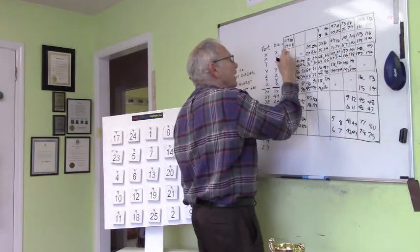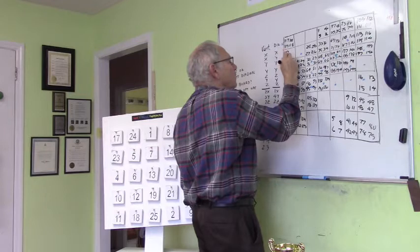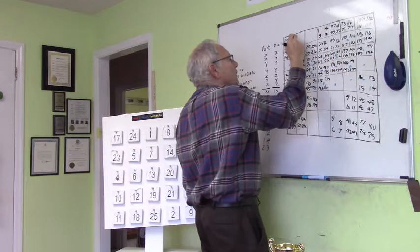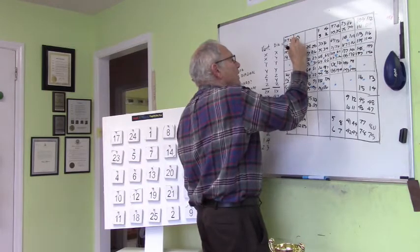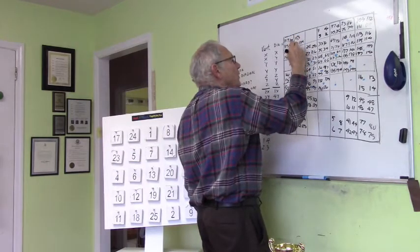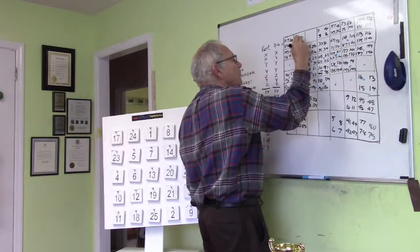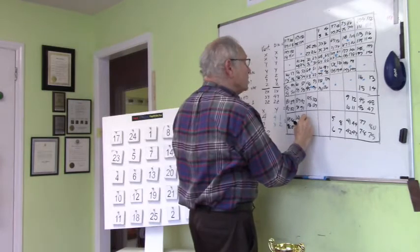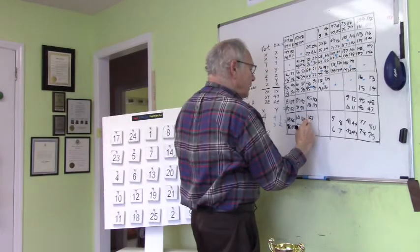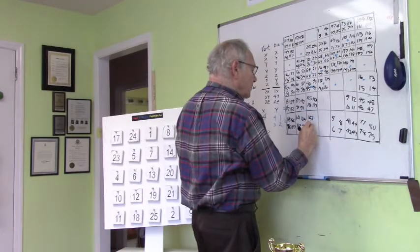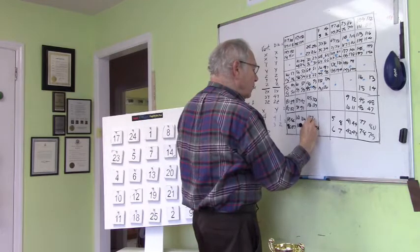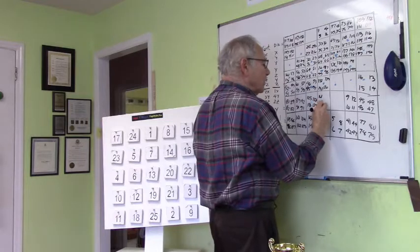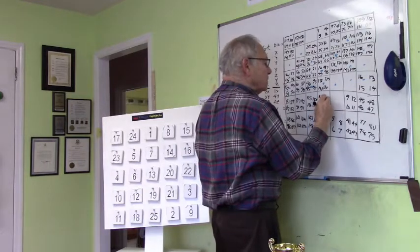We're back in the X region: 149, 150, 151, 152, 153, 154, 155, 156. We're now in the Z region: 157, 158, 159, 160, 161, 162, 163, 164. And 165 in the Y region.